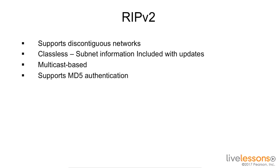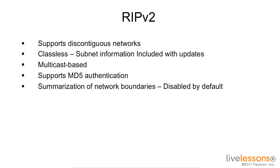RIPv2 also supports security in the form of MD5 authentication and supports summarization of network boundaries, which is disabled by default. Although RIPv2 is a great improvement over RIPv1, it is still not commonly used in today's networks.